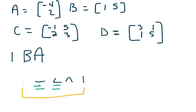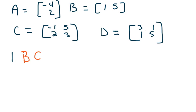Okay, let's try a couple more. Let's try B times C. Okay, so B, we have a one by two.